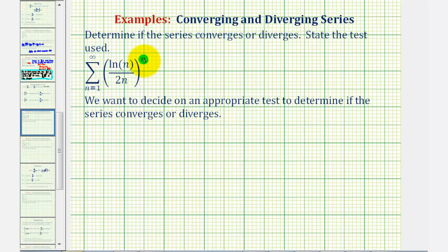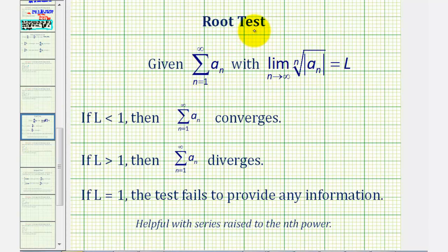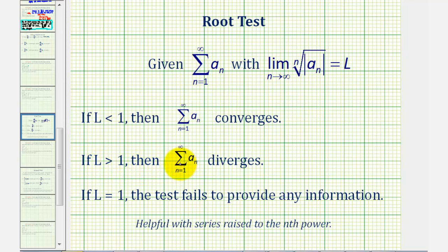Let's review the root test before we apply it. The root test tells us that given the summation of a sub n, with the limit as n approaches infinity of the nth root of the absolute value of a sub n equal to L: if L is less than one, then the sum of a sub n converges; if L is greater than one, then the sum of a sub n diverges.